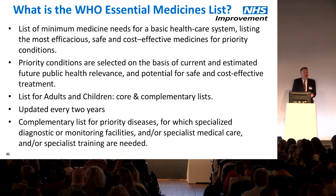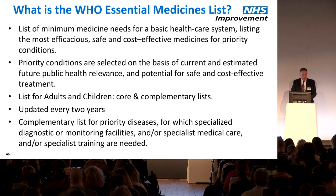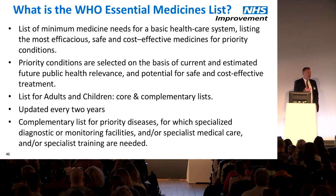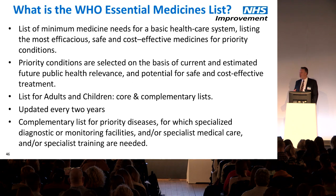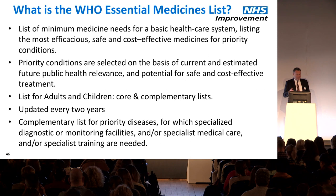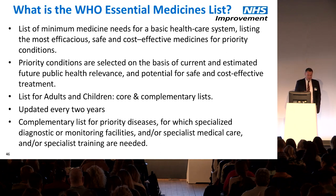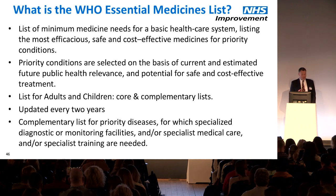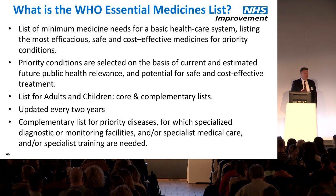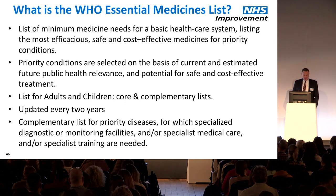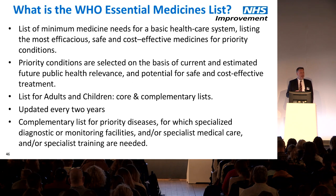The WHO Essential Medicines List applies to the whole world, not just the developed world. It's basically a list of minimum medicine needs for basic healthcare systems, listing the most efficacious, safe, and cost-effective treatments — and cost-effectiveness is really important — for priority conditions. There are two lists: one for adults and one for children, each with a core list and a complementary list, updated every two years by global experts.